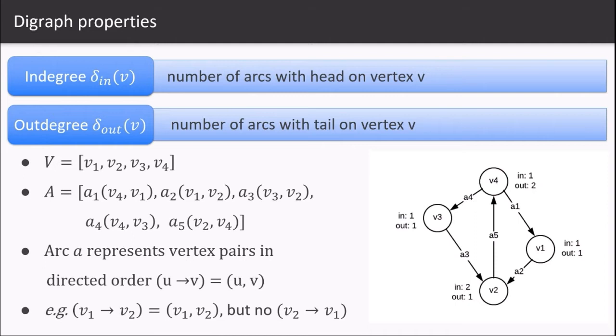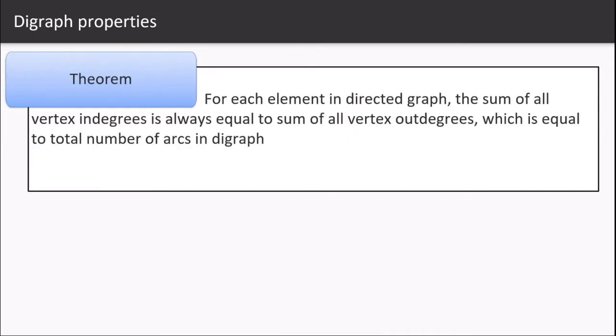So if a pair is v1, v2 that means that v1 is directed to v2. A theorem in directed graph properties includes: for each element in the directed graph, the sum of all the vertex in-degrees is always equal to the sum of all vertex out-degrees, which eventually is equal to total number of arcs in the digraph.